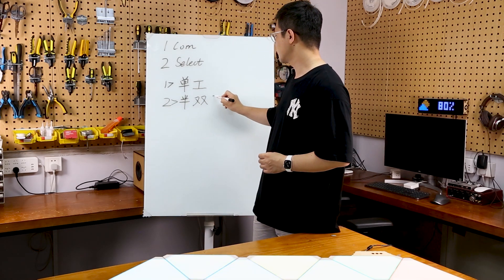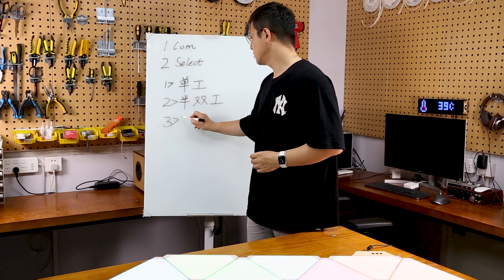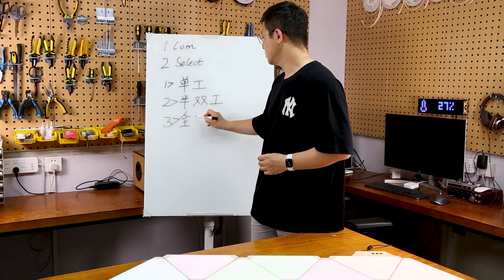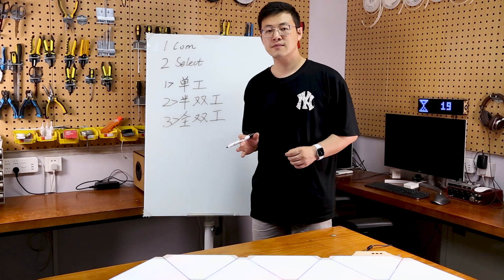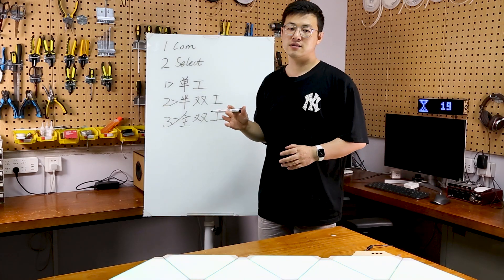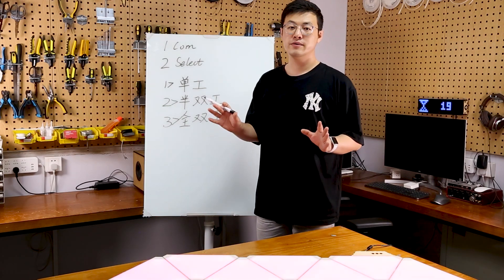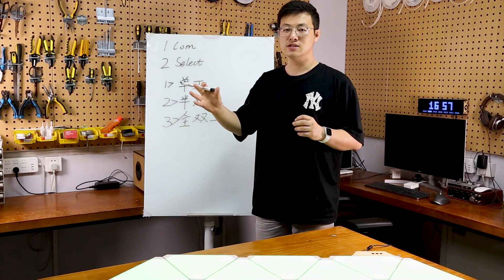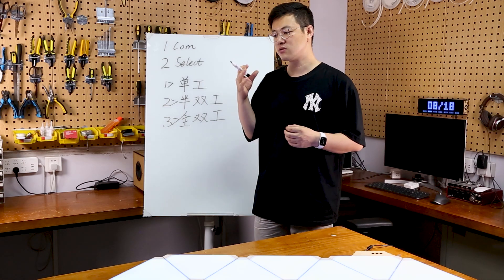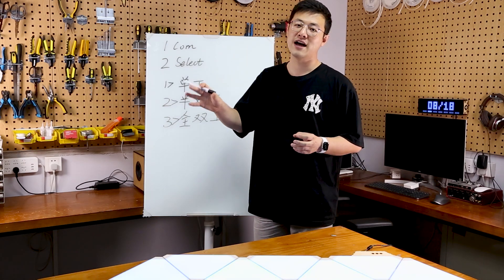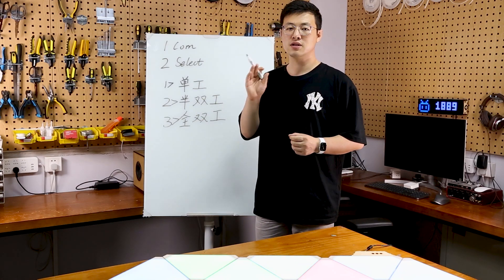半双工通讯，以及全双工通讯。那这三种通讯分别是什么意思呢？单工通讯就相当于一个广播。我们的广播电视台只能发消息，我们的收音机只能收消息，永远是这样的。我永远不可能通过收音机给广播电视台发一个消息，这是做不到的。它是单向的一个消息通讯方式，所以叫做单工通讯。